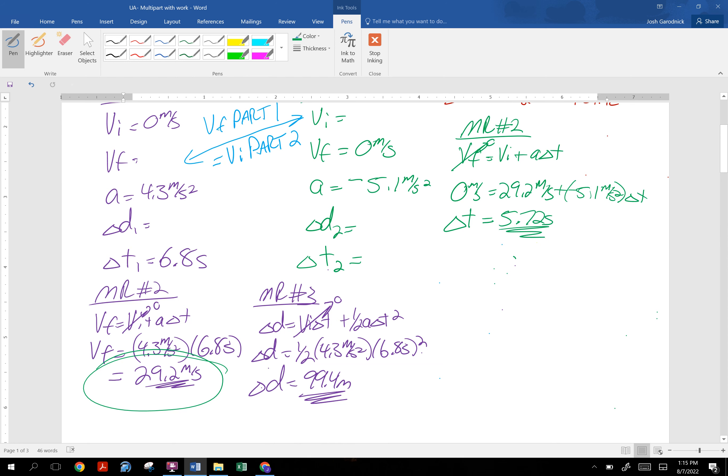Then we need the distance traveled. You can use math rep three or math rep four. Personally, I'm going to do math rep four. So the vf squared equation: final velocity squared equals initial velocity squared plus twice the acceleration times the distance. That is zero equals 29.2 meters per second squared plus twice the acceleration, which is negative 5.1 meters per second squared times the distance for part two. So delta d part two is going to be 83.6 meters.